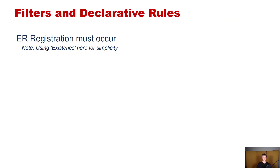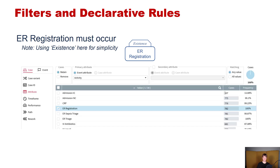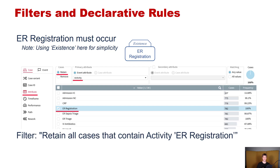Let's take some examples. ER registration must occur — note that here we're using existence for simplicity. This is how we represented it in the previous part of the lecture. The corresponding filter is simply an attribute filter retaining cases based on the activity name ER registration, and the filter reads: retain all cases that contain activity ER registration.